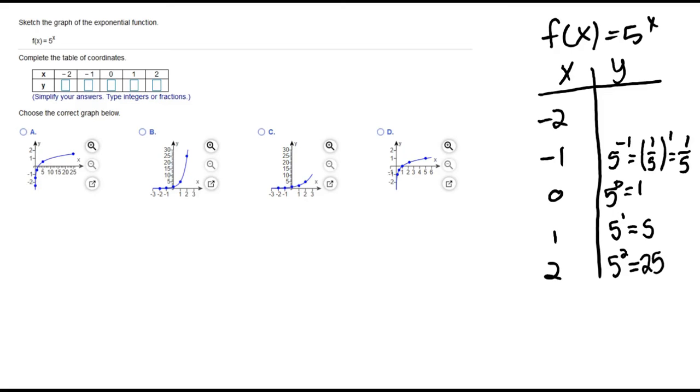We have 5 to the negative 2. That negative means we're going to do the reciprocal of the base and then raise it to the second power, so we get 1/25. So these are the ordered pairs that we get.